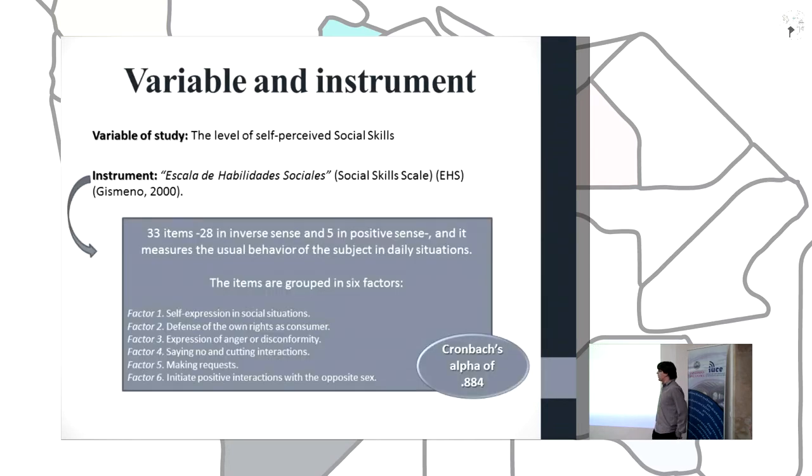The variable of the study is the level of self-perceived social skills. And the instrument used in the study is the Escala de Habilidades Sociales, social skills scale, proposed by Gismero in 2000. The instrument is composed by 33 items, 28 in inverse sense and 5 in positive sense. And it measures the usual behavior of the subject in its daily situations.